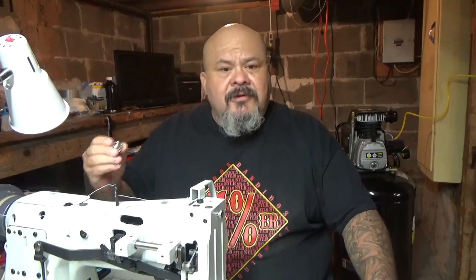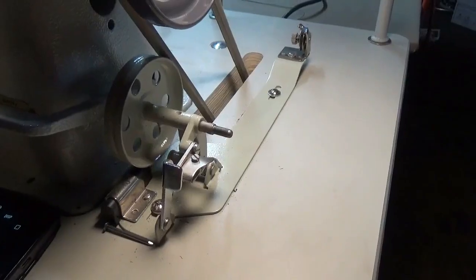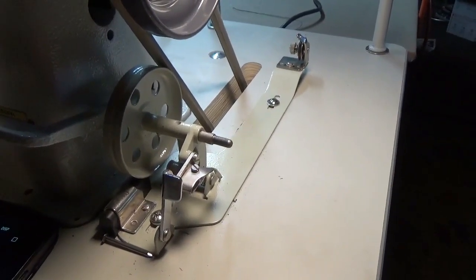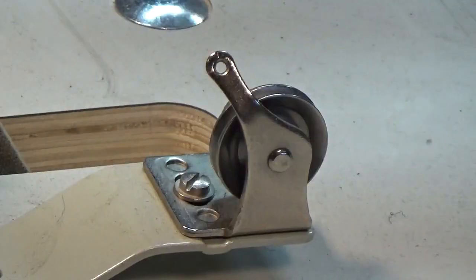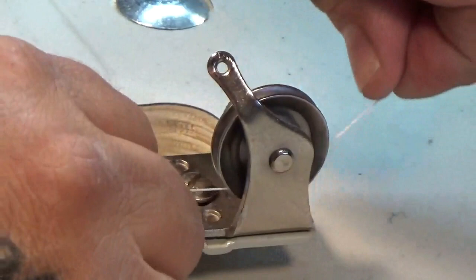You start out with your M-style bobbin, which is a bigger style bobbin. With this machine, you're able to thread a bobbin while you continue to sew. You'll grab your thread off your spool from your thread stand.